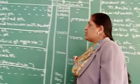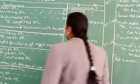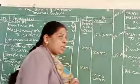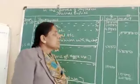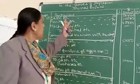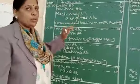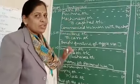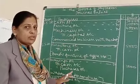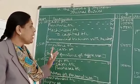These are the journal entries, students. If there are two or more than two debits or credits, we call it a compound entry.